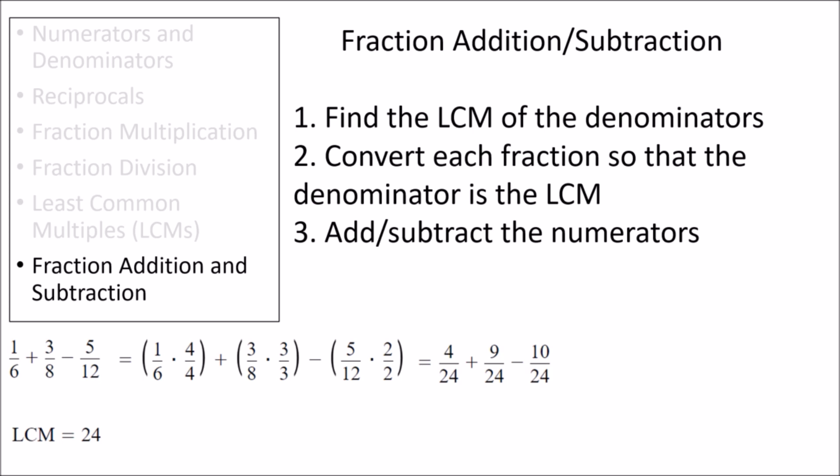Now we can just add and subtract the numerators: 4 plus 9 minus 10, which equals 3. So the final unsimplified result is 3 over 24. Since the numerator and denominator are both divisible by 3, we can simplify the final answer to 1 eighth.